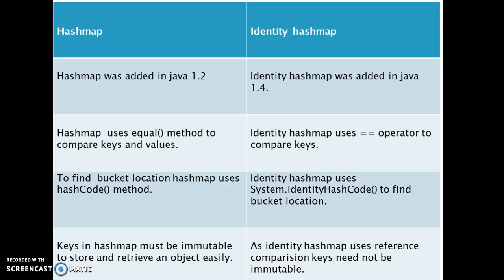Keys in HashMap must be immutable to store and retrieve an object easily. But in the case of IdentityHashMap, since it uses reference comparison, keys need not be immutable.